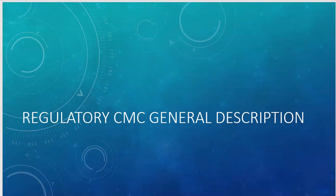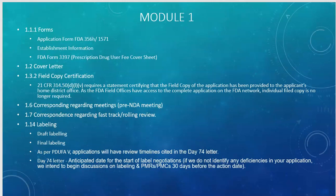As we know, any regulatory filing has five modules. Module 1 is an administrative module. Module 2 covers all the summaries. Module 3 is basically your Regulatory CMC — your quality documentation. Module 4 is non-clinical and Module 5 is clinical. In the regulatory CMC field, we are only concerned with Module 1, the Quality Overall Summary in Module 2, and the whole of Module 3.